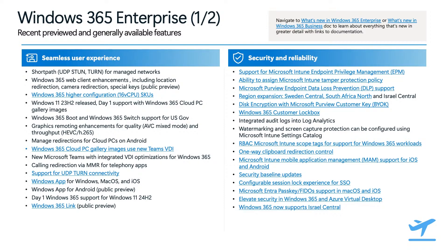We are looking forward to bringing the Windows app on Android to general availability very soon. Along with the Windows app, we have also been busy improving connection reliability. We released support for UDP TURN connectivity, which is a big step forward for performance on lossy networks. We continue delivering in-session performance enhancements across graphics remoting with the HEVC codec, as well as the Teams VDI optimizations for Windows 365, which are now available on our gallery images.